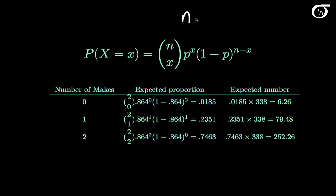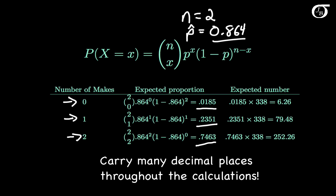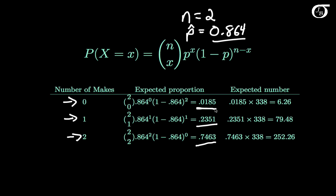The calculations proceed similarly to before. We use the binomial formula with n=2, but now with p-hat=0.864. Using this for 0, 1, and 2 successes, we get expected proportions of 0.0185, 0.2351, and 0.7463. Multiplying by 338 pairs of free throws gives us the expected counts. Note: rounding is applied here for display purposes, but many decimal places should be carried throughout calculations.